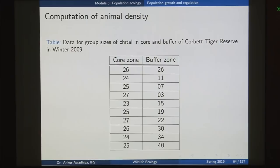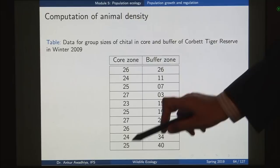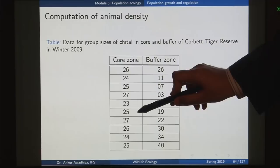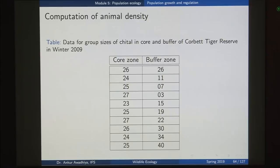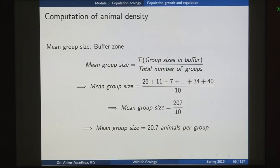What kind of inferences can we make out of such data? We begin by looking at the mean group size. You take the total of all of these. For the core, you make a sum of all of these and the number of groups is 10. The sum of all the group sizes in the core divided by the total number of groups comes to 252 by 10, which is 25.2 animals per group in the core area. Similarly, you can repeat this process for the buffer area — the number of animals per group there is 20.7. The number of animals per group in the buffer area is less than in the core area.